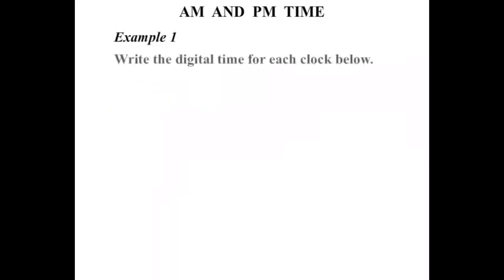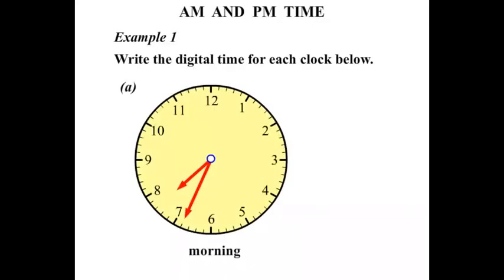Example one: write the digital time for each clock below. Got a clock here. Now the digital time you should be pretty good at this already. It's 7:34. Now it's in the morning. The morning of course is before midday so it's AM. So when you see the morning, AM.